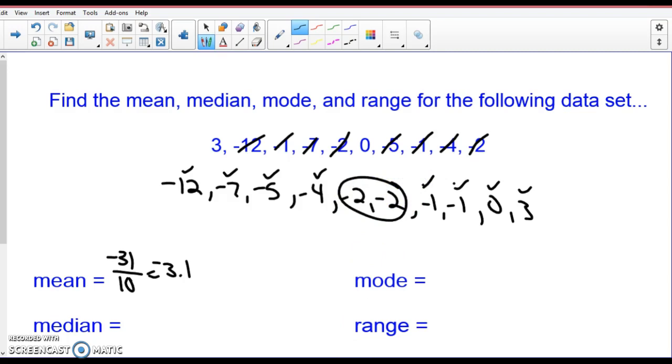But if there are two middle numbers, you add them. Negative 2 plus negative 2 divided by 2 gives me negative 2, which is still going to be negative 2.